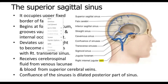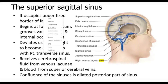This is the superior sagittal sinus, going to end over here in the confluence of the straight sinus and the left and right transverse sinuses. The confluence means junction, so here all the sinuses are joining with each other.